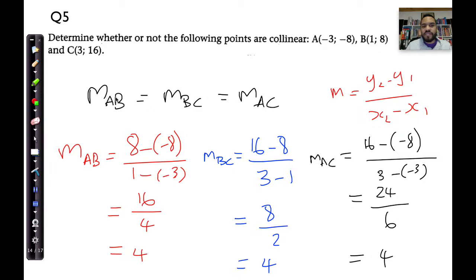Now, we can say because the gradient of M_AB, or the gradient between A and B is the same as the gradient between B and C, which is exactly the same as the gradient between A and C, I can conclude that the points A, B, and C are collinear. Therefore, A, B, and C are collinear. And that concludes question number 5.